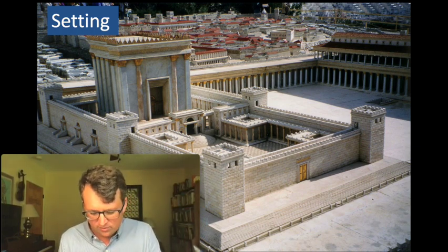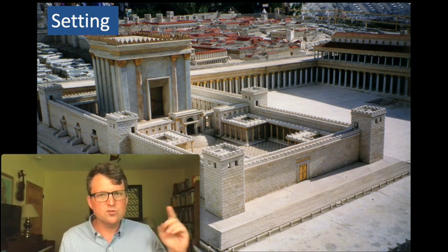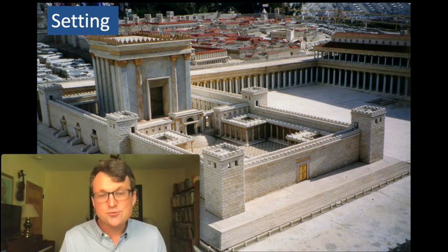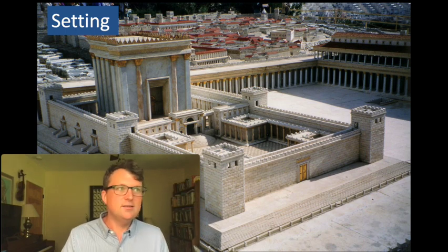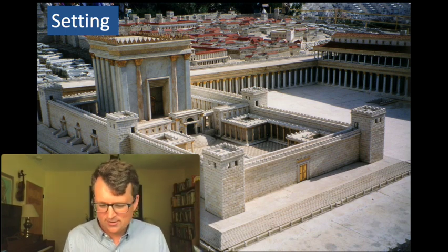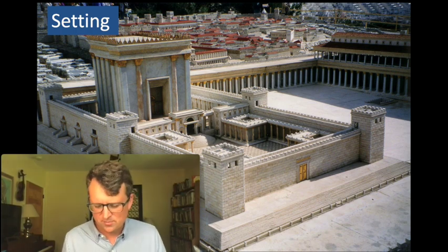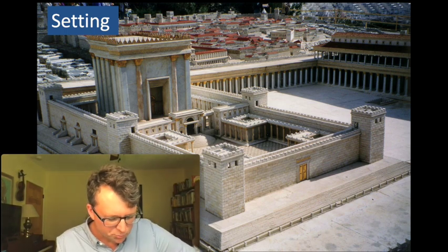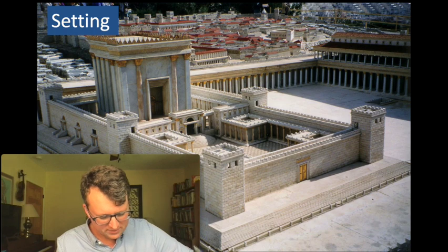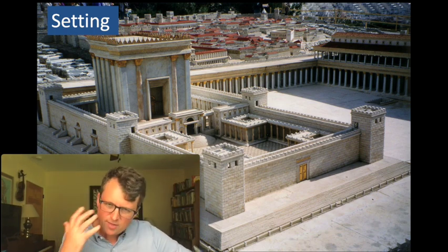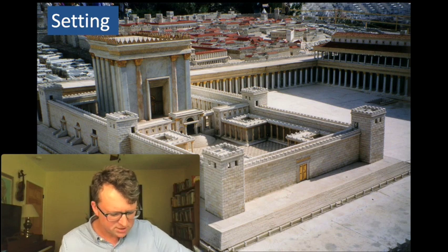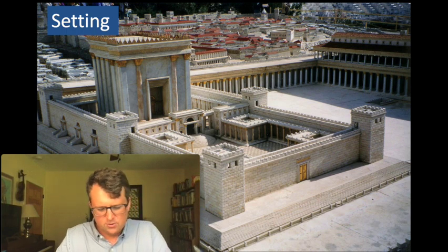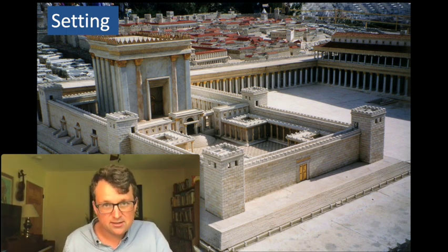Psalm 24 is almost that same psalm but a little different. It's another entrance liturgy, we think. Verse 3: 'Who shall ascend the hill of the Lord and who shall stand in God's holy place? Those who have clean hands and pure hearts, who don't lift up their souls to what's false.' Again, probably an entrance liturgy into the temple. But then verse 7: 'Lift up your heads, O gates, and be lifted up, O ancient doors, that the King of glory may come in. Who is this King of glory? The Lord, strong and mighty.' You can hear a call and response here.